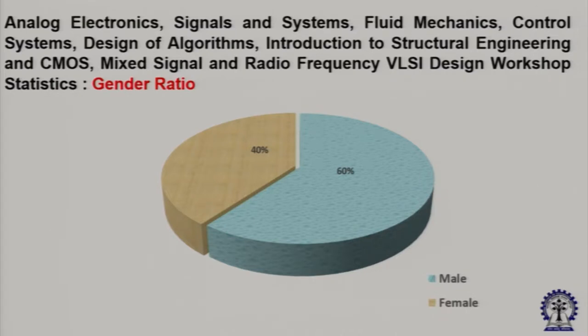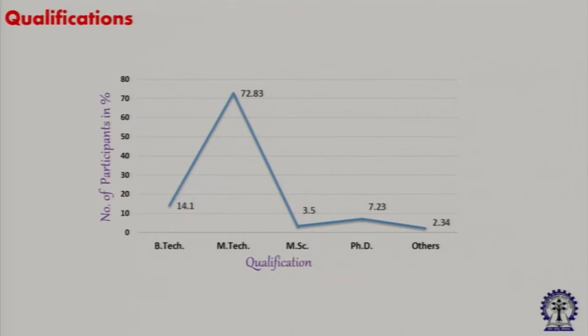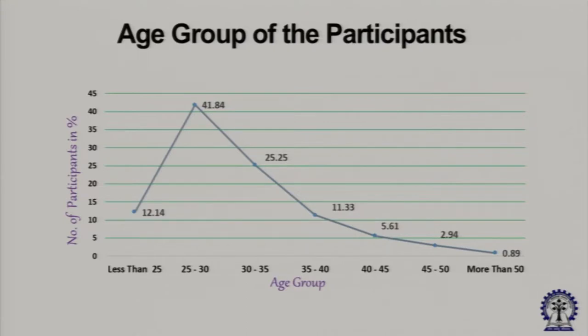More than 50,000 teachers have been trained from IIT Kharagpur on these courses. If you look at the gender ratio, we had quite nice participation from the female side — around 40 percent from females and 60 percent male, which is quite a good number. Looking at the qualification of participants, most people who attended these courses were at the master's level, with the highest figure of roughly 73 percent.